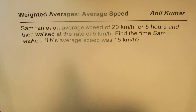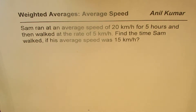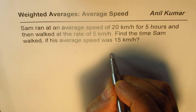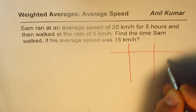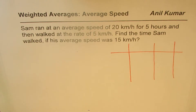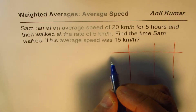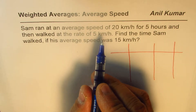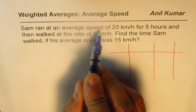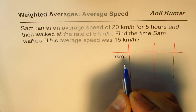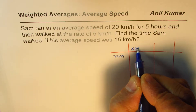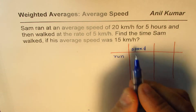Now in this question, let me make a table so that we can understand what is given to us and what we need to find. It is a distance, speed, time case. What we are given here is the speed for walking and for running. We are given the average speed at which he ran. So for running, the speed is 20 kilometers per hour.